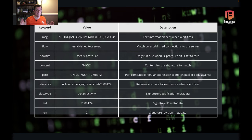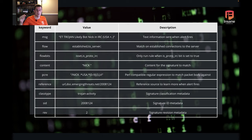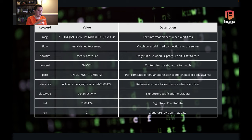Starting out with the message — this is the text information that's actually going to be in your log when the alert fires. The convention, as stated in the documentation, is to start in all caps. Here we have ET Trojan — that's Emerging Threats Trojans — and then the description of what it does. The flow field is next: established to server means this is going to match on established connections going to the server, further honing down what this rule is looking at.